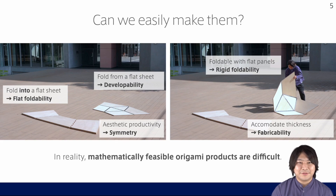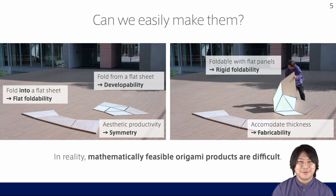We also have to care about the rigidity of the wood panels, because many origami patterns rely on the deformation of the facets in the folding process. Finally, the products have thickness, so we need to consider self-collision and the suitable hinge structures for the used fabrication method.